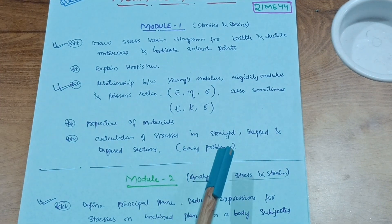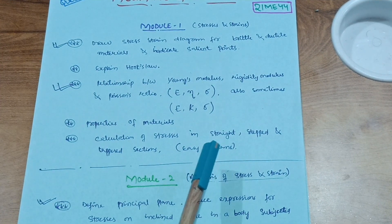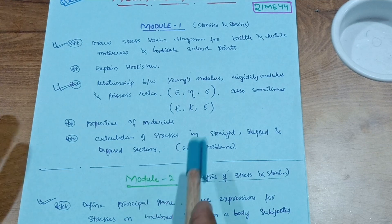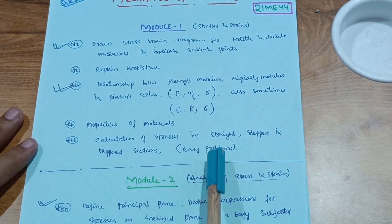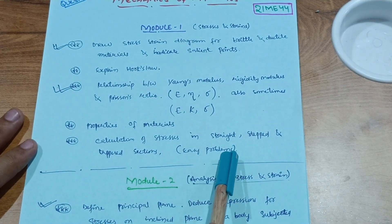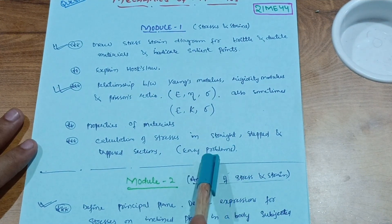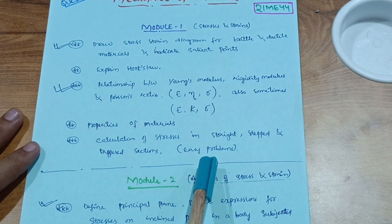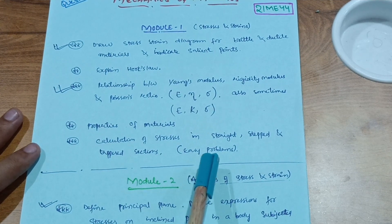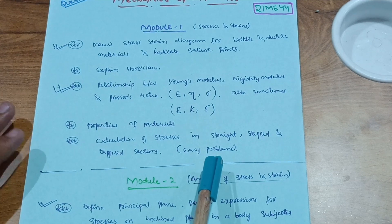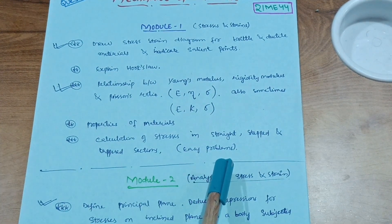Sometimes they may also ask the relationship between Young's modulus, bulk modulus, and Poisson's ratio. Note that Young's modulus is sometimes denoted by Y. You should also focus on properties of materials like elasticity, plasticity, and toughness, and on calculations of stress in stepped and tapered sections. Covering these problems will help you easily secure at least 15 to 20 marks from Module 1.